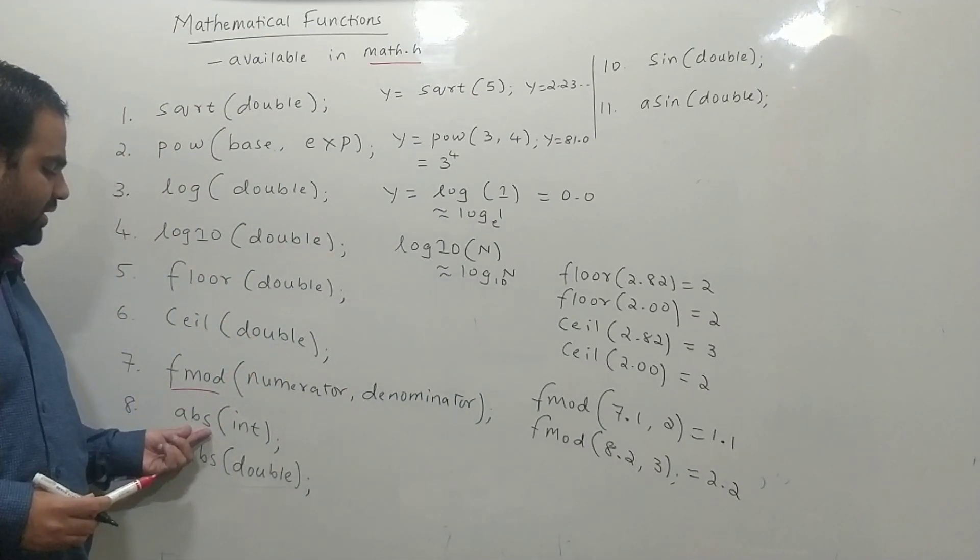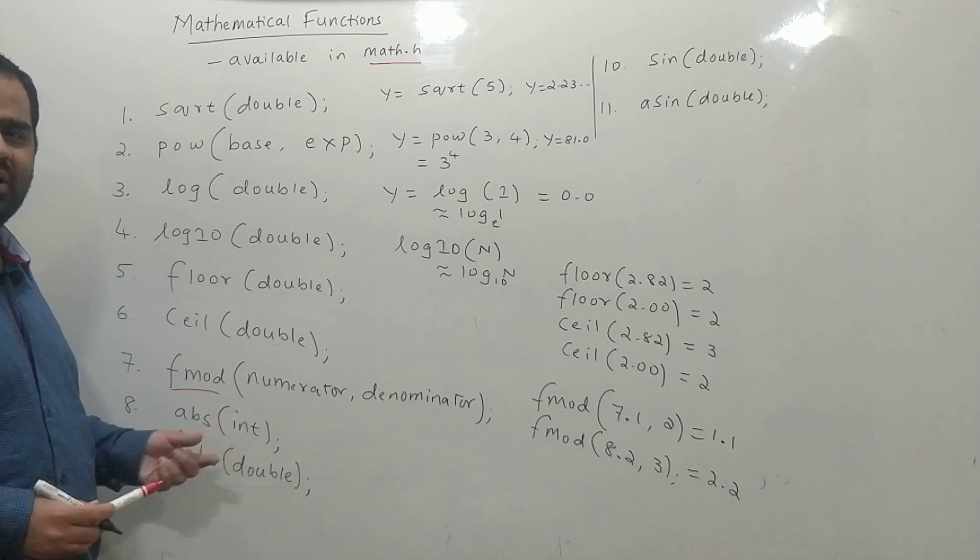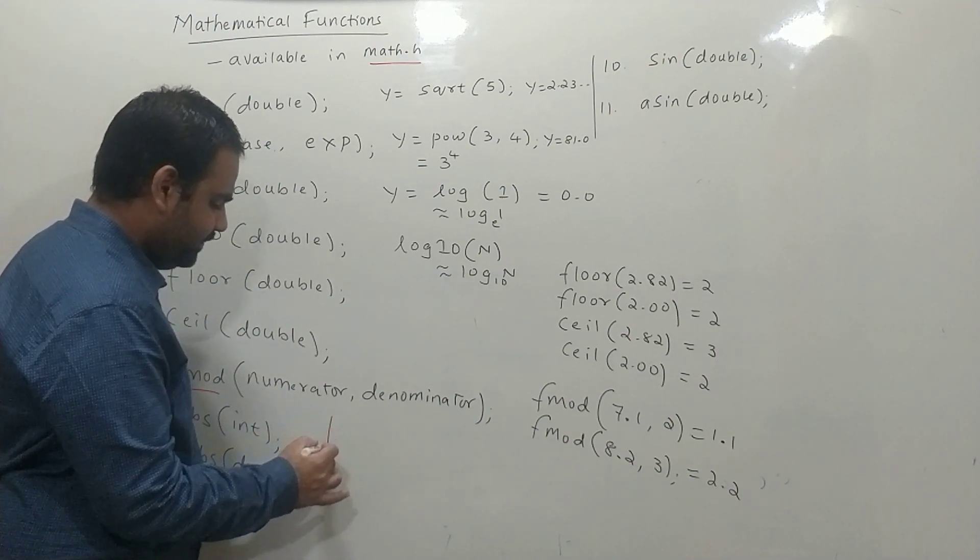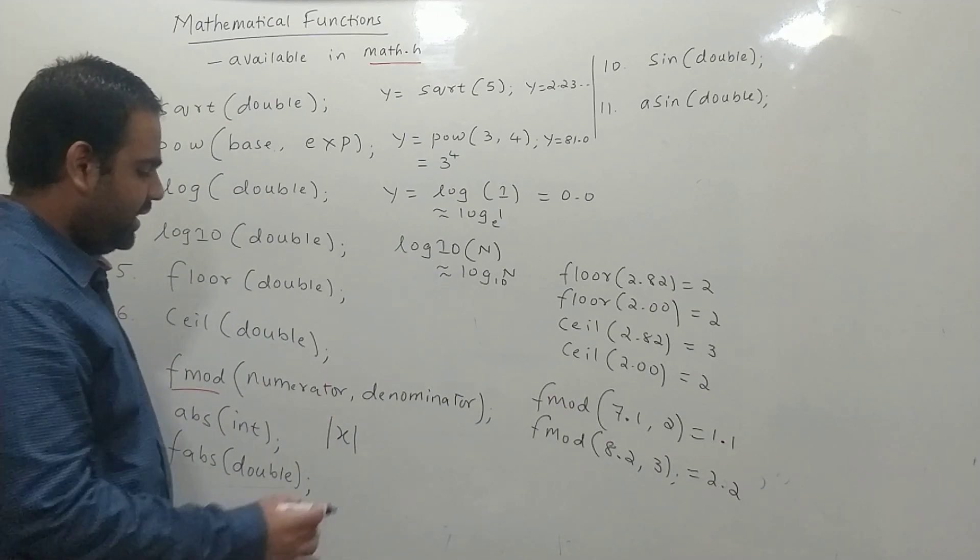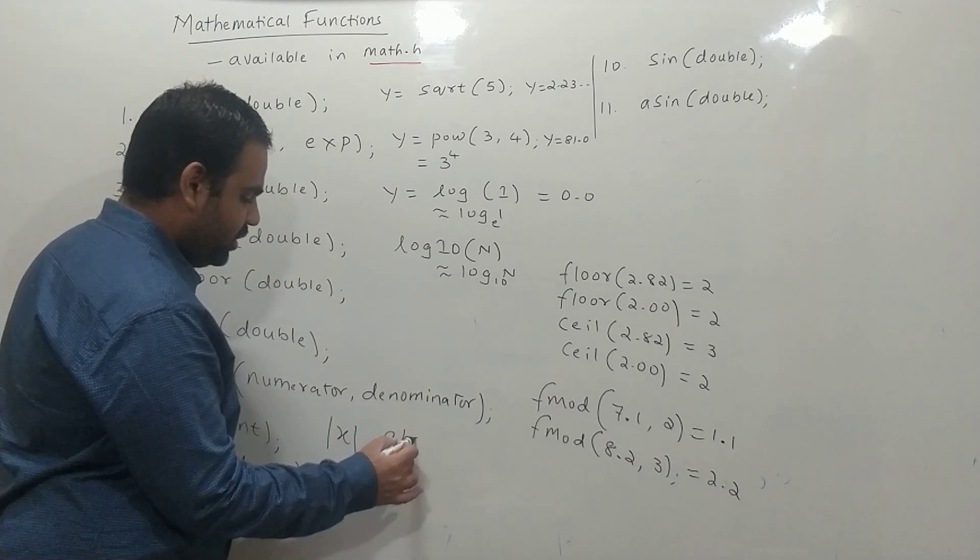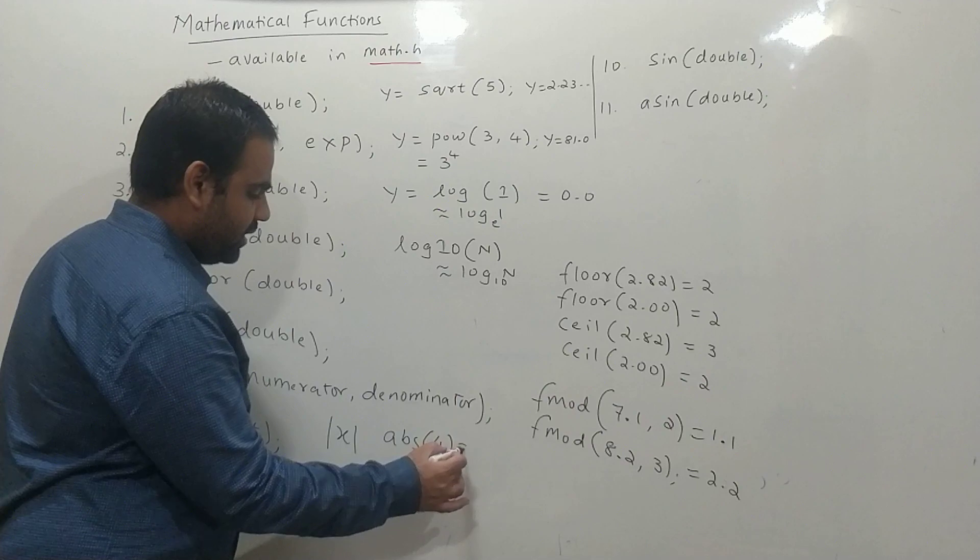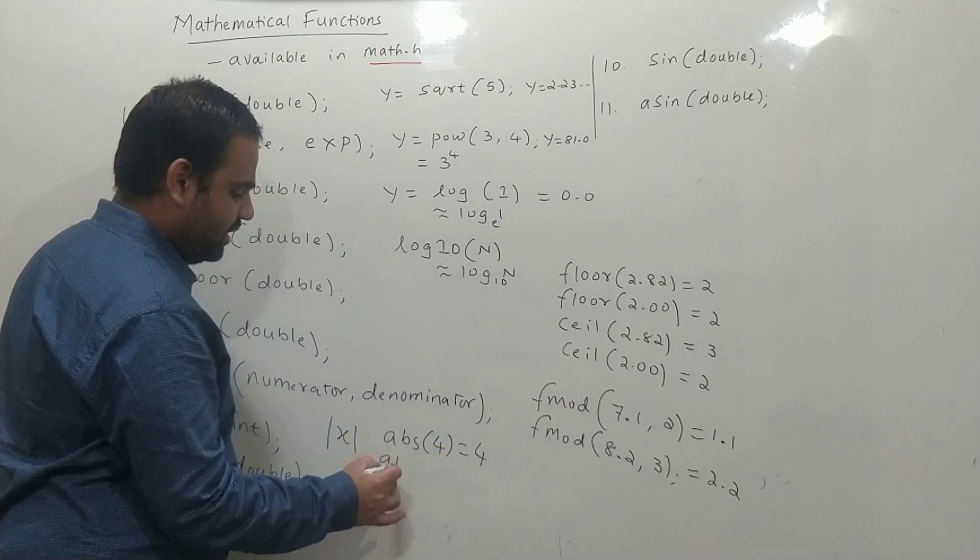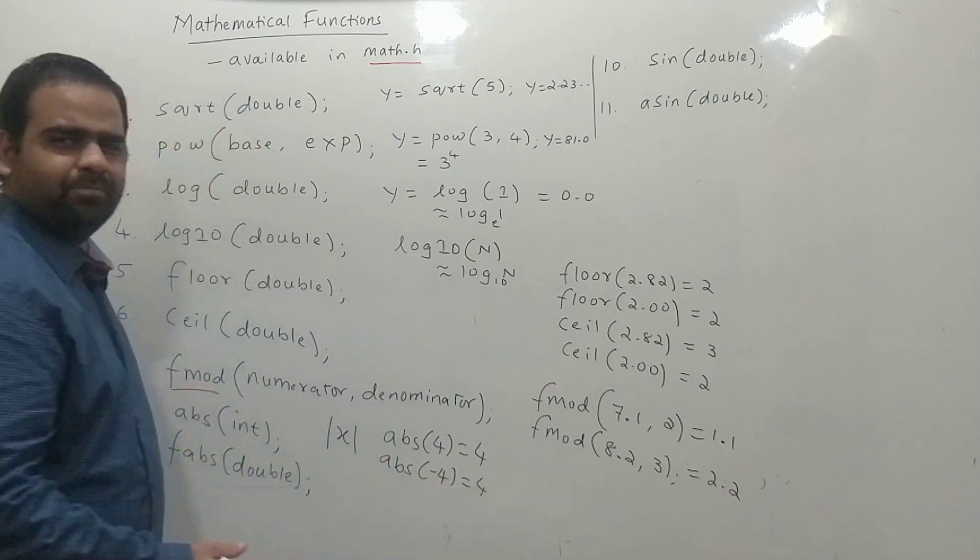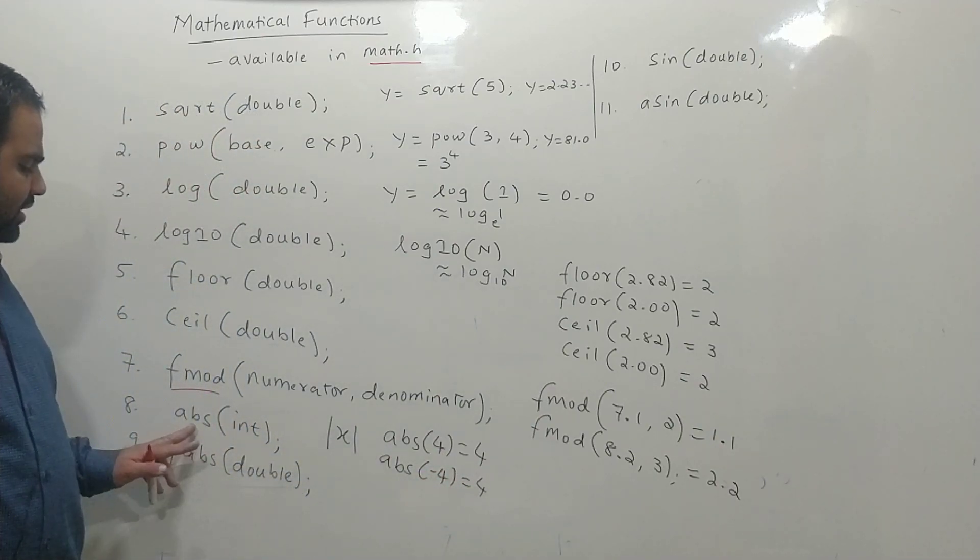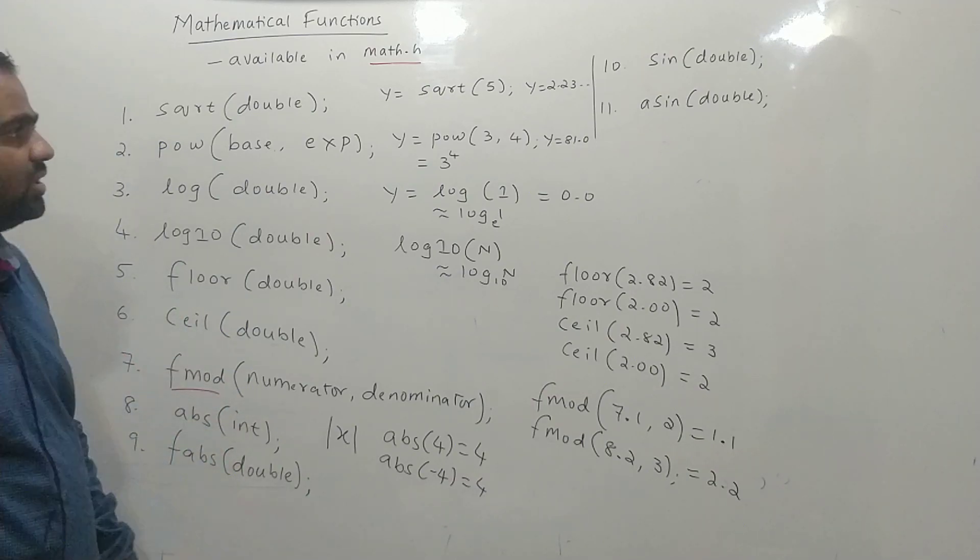Next is absolute of integer. It is same as modulus function, same as mod x in mathematics. If we say absolute value of 4, you get the answer as 4. And if we write absolute of minus 4, we get 4. It is same as the absolute function, but fabs works on real numbers and abs works on integer numbers.